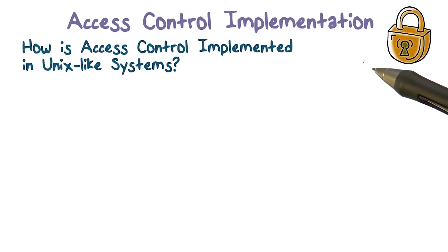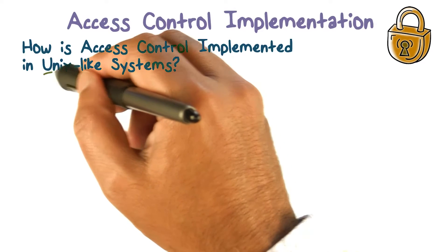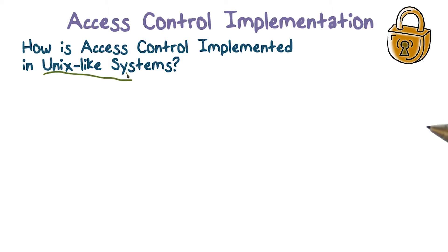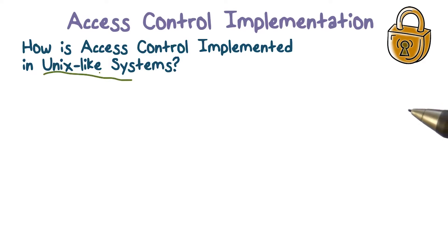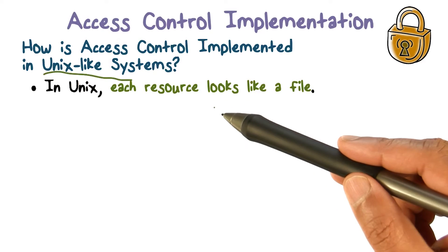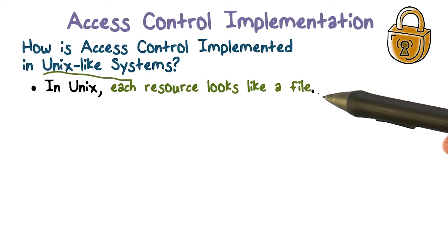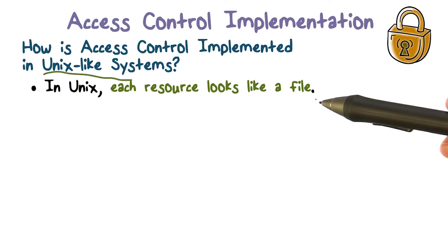Now we're going to talk about how access control is actually implemented in real operating systems. We're going to talk about Unix-like systems, but similar things are done in other operating systems. In Unix, every resource for which access needs to be controlled looks like a file.